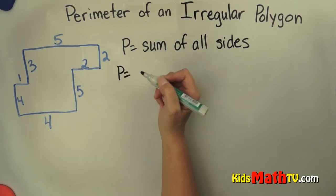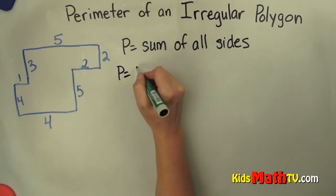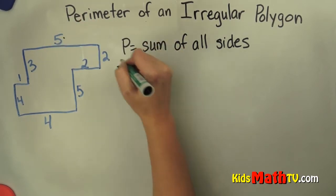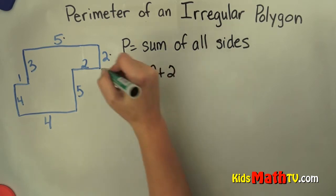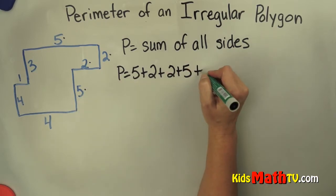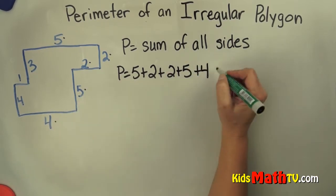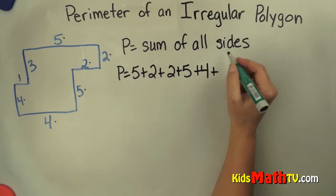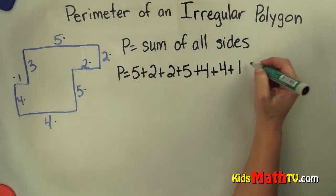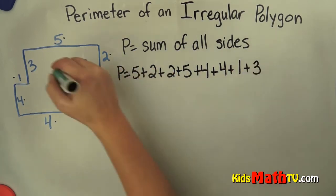So the perimeter in this case will be equal to 5 plus 2 plus 2, I'm just marking them to make sure I have them all, plus 5, plus 4, plus 4, plus 1, plus 3.